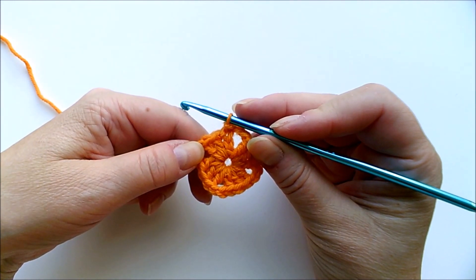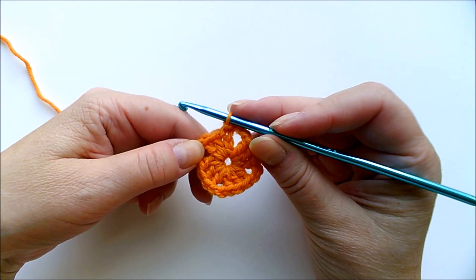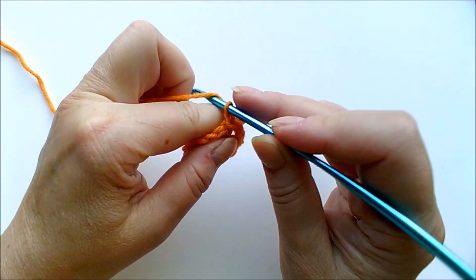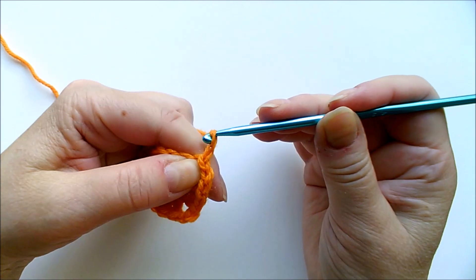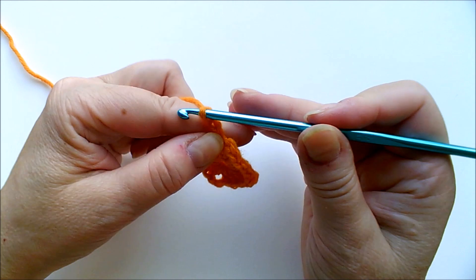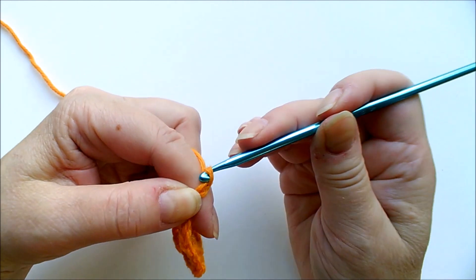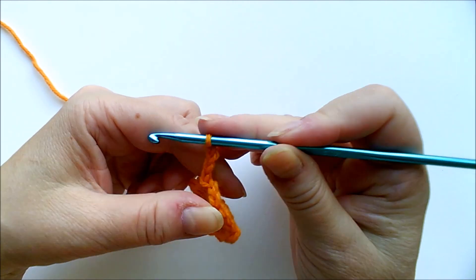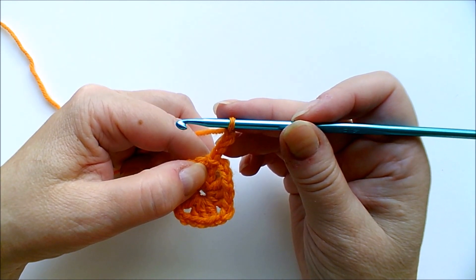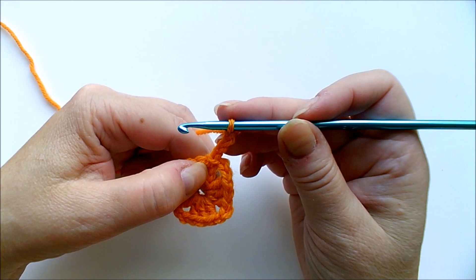And then to continue I will chain four. This works both as the first double crochet of the next row as well as an extra stitch that we need for the corner.